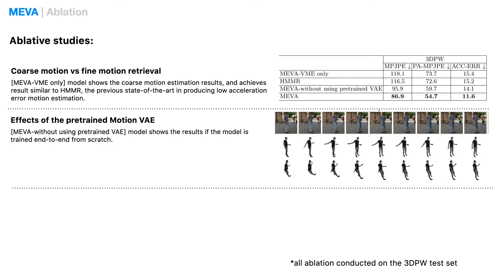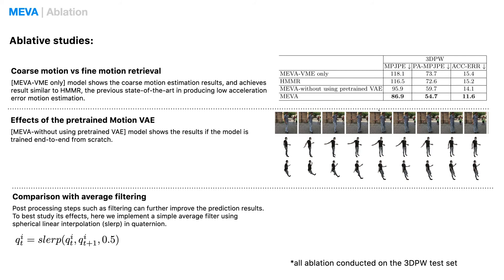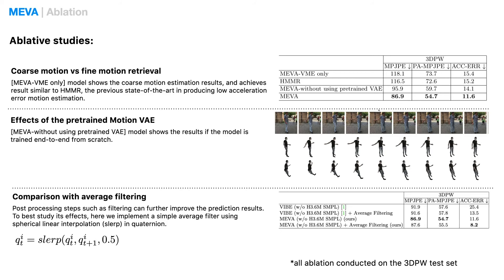Another natural approach to improve performance is post-processing. Here we implemented a simple post-processing step, average filtering. From the results, it is clear that average filtering can help reduce acceleration error for both MEVA and VIBE, while slightly affecting the accuracy.